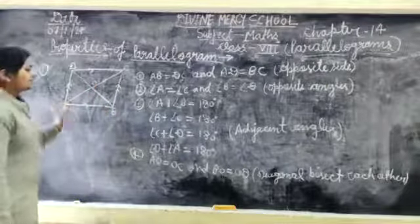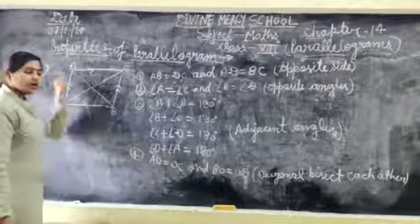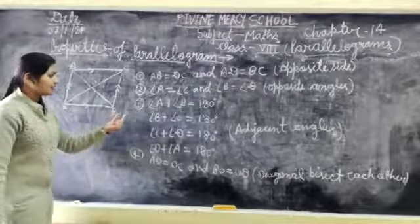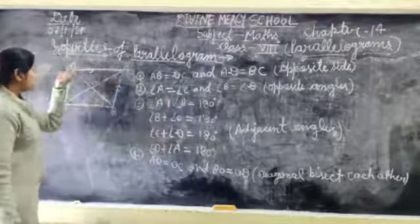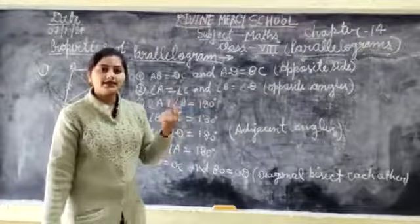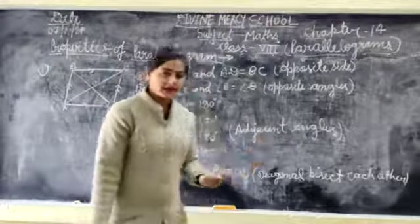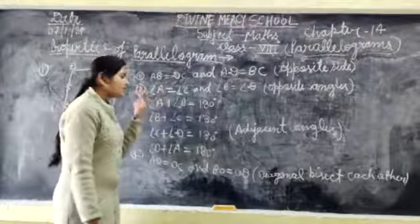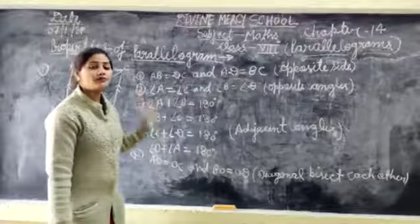The third property is adjacent angles. Angle A plus angle B is equal to 180 degrees. Angle B plus angle C is equal to 180 degrees. Angle C plus angle D is also 180 degrees. So the third property is that adjacent angles are always supplementary — the sum of adjacent angles is always 180 degrees in a parallelogram.